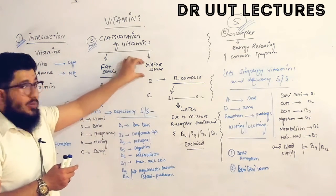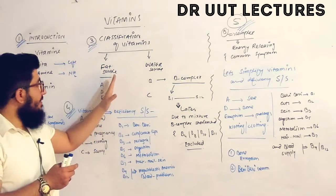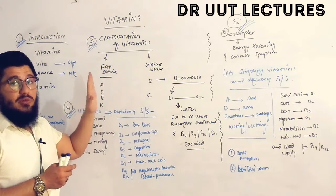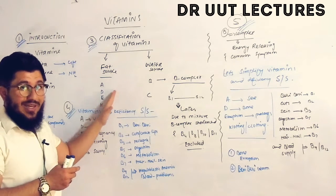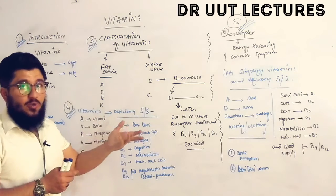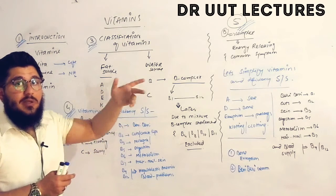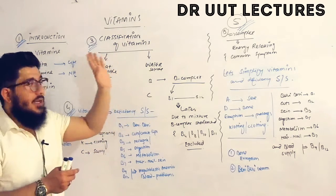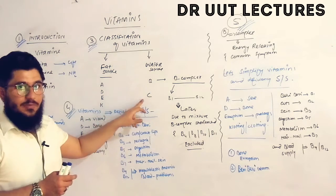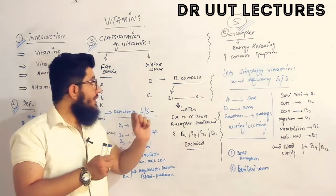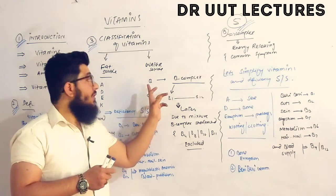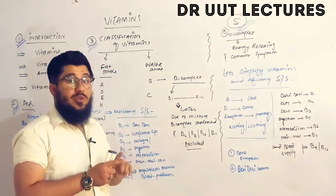If you remember the fat-soluble vitamins A, D, E, and K, then it is easy to place the remaining vitamins B and C into the other class — the water-soluble vitamins. Vitamin B is further composed of B1 through B12.